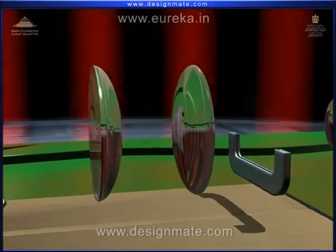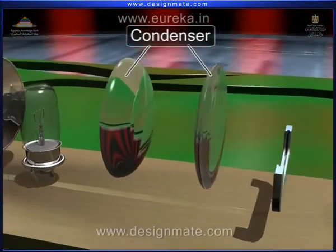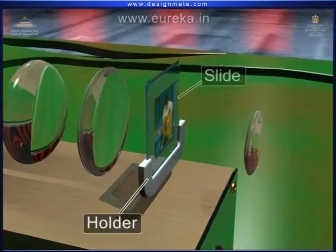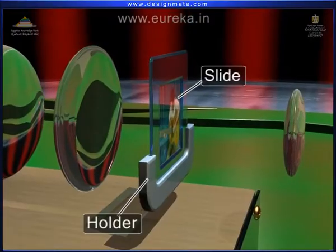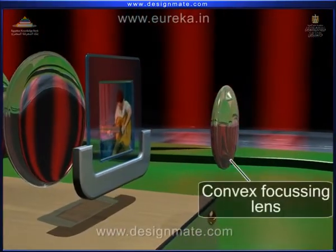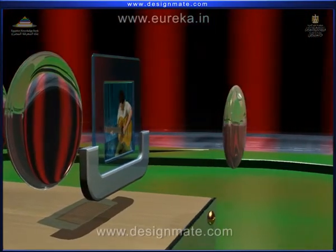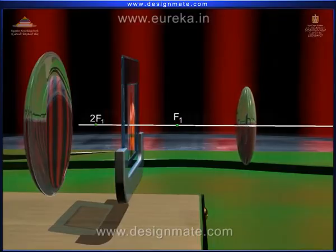Then there is a pair of converging lenses called the condenser. In front of these lenses, there is a holder where the slide is placed. Lastly, there is a convex focusing lens, which is positioned in such a way that the slide holder lies between F1 and 2F1 of the lens.